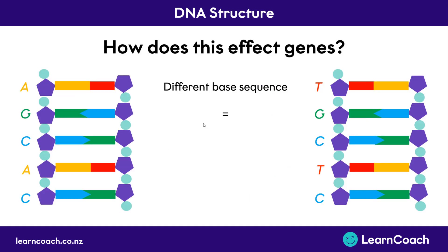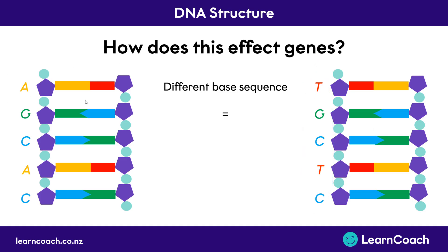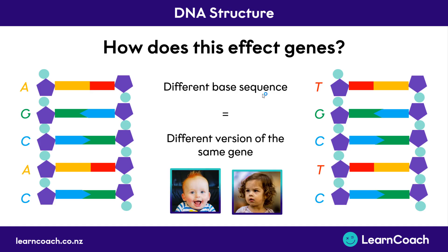Now you might be wondering, what happens if we get the same gene but there's a slightly different base sequence? You can see here that on the left we have the base sequence A, G, C, A, C, and on the right we have the sequence T, G, C, T, C — which is mostly similar, but the A's and the T's have swapped around. Well, when this happens, we have a different base sequence, causing us to have a different version of the same gene. Both of these genes still code for hair colour, but one codes for ginger hair and the other codes for brown hair, and this happens because of differences in the base sequence, or the order of the bases. We call these differences alleles.